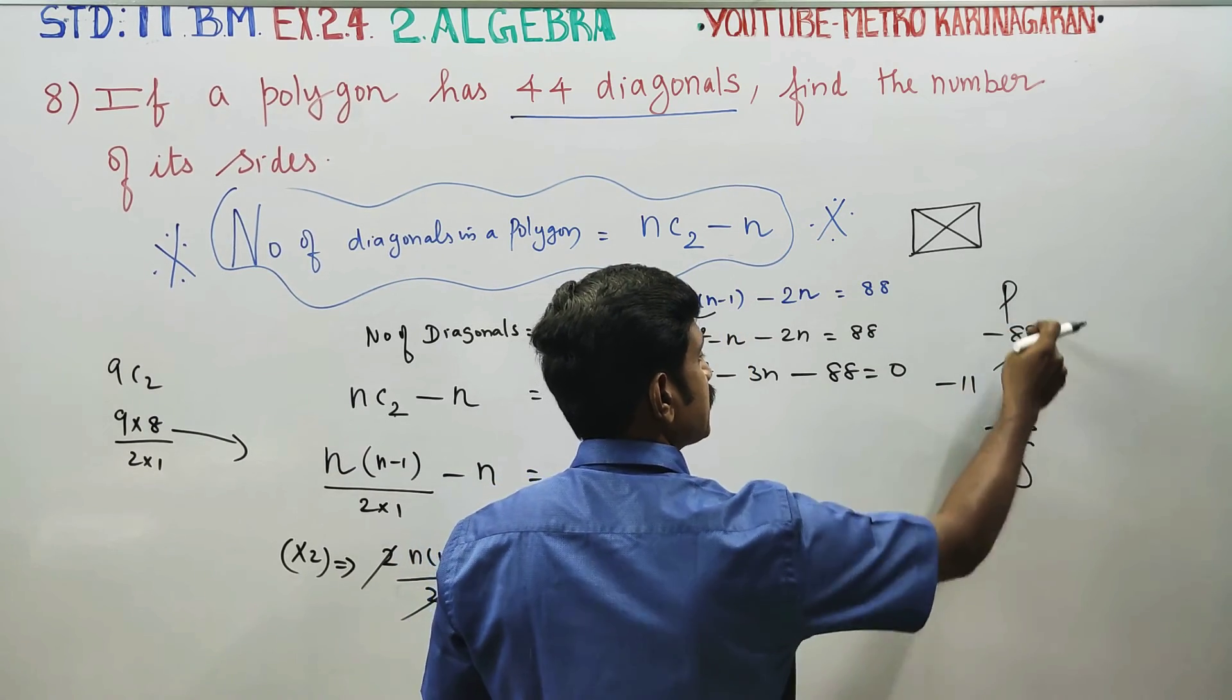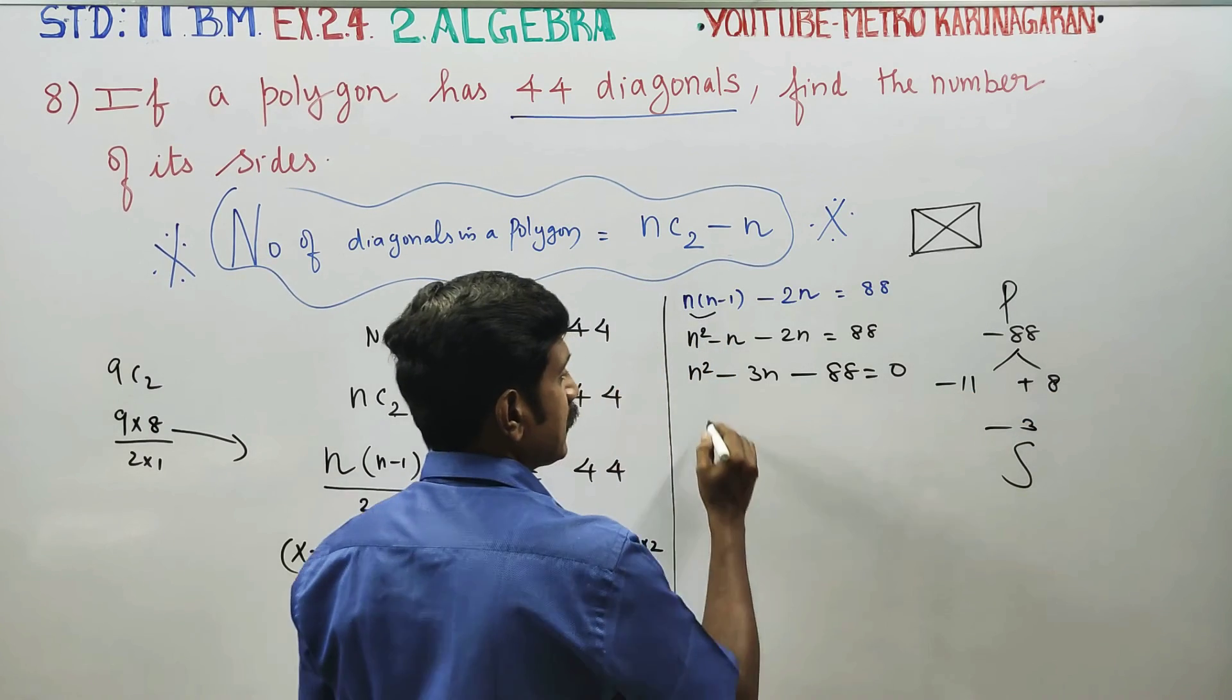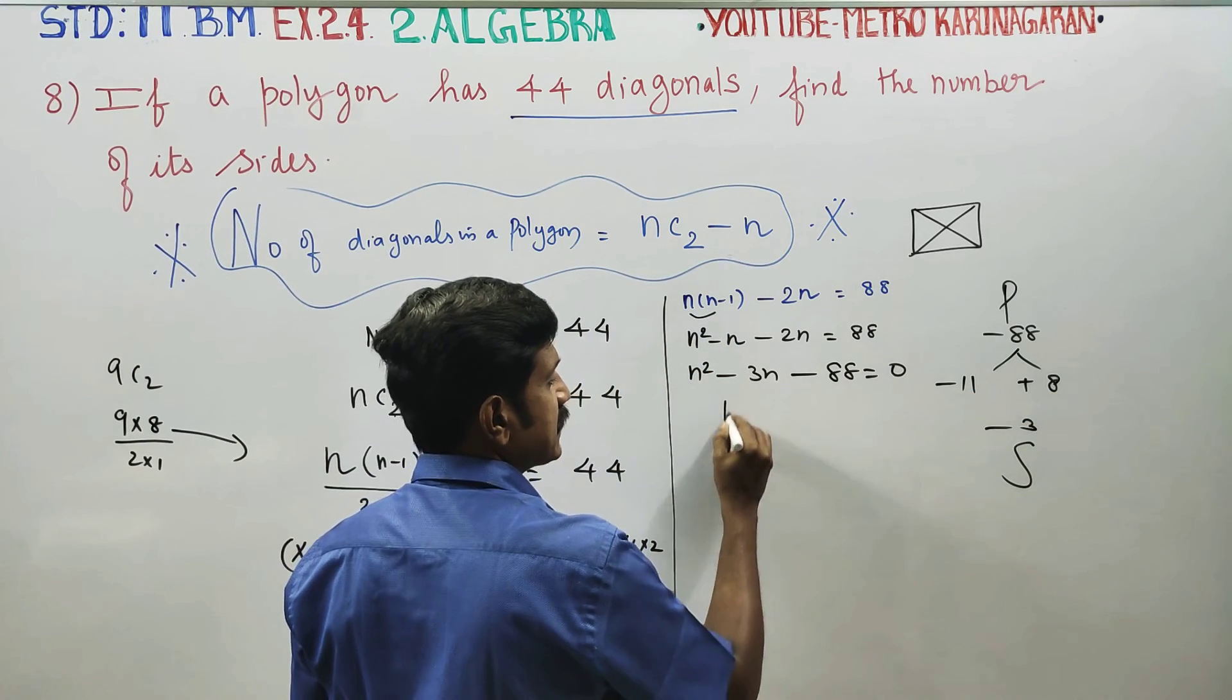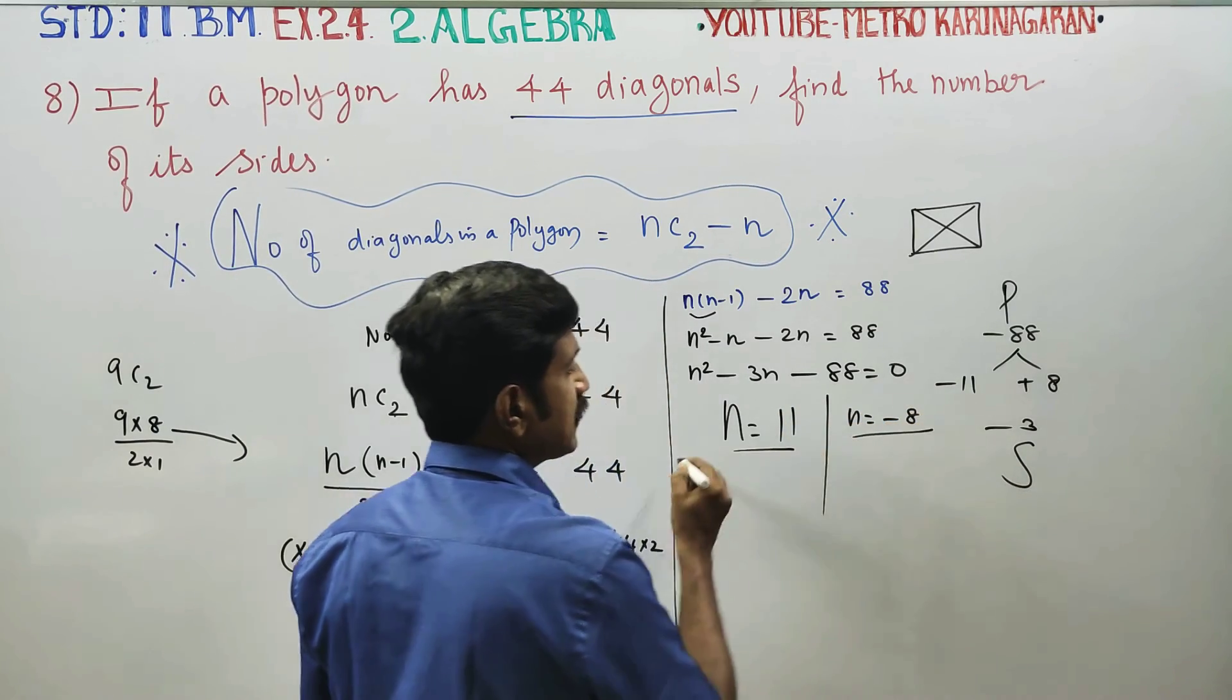Minus 1 into plus minus 11 times 8 is equal to 88. 11 minus 8 is equal to 3. The answer is n equal to minus 8 or plus 11.